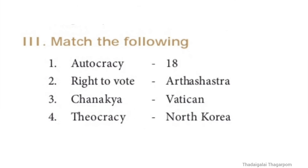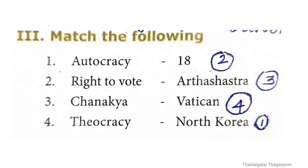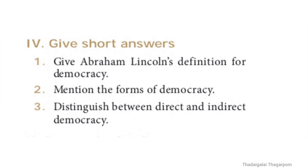Roman numeral three: match the following. First: autocracy - North Korea. Second: right to vote - 18. Third: Chanakya - Arthashastra. Fourth: theocracy - Vatican. The correct matching order is 2, 3, 4, 1.